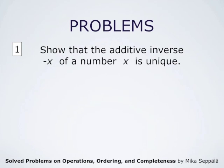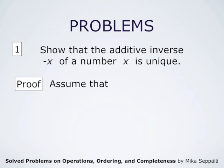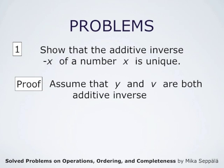In this problem, we have to show that the additive inverse — the negative of x — of the number x is unique. We do that by using properties of addition and the defining property of the additive inverse. To that end, we assume that y and v are both additive inverses of x, so we assume that this additive inverse might not be unique — there may be two different additive inverses, y and v, for the same number x.